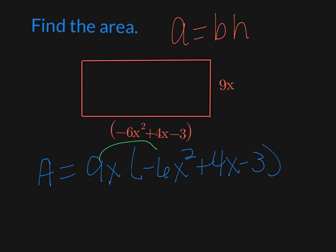So 9x times negative 6x squared, remember that has a 1, multiplying so we're adding exponents. So 9 times negative 6 is negative 54, and then I have x to the third. And then I have 9x times 4x. So 9 times 4 is 36, and if I add my exponents I get squared.